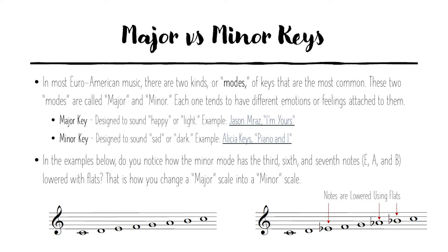Notice how the scales are built slightly differently from a major scale to a minor scale. We've got a C major scale like we've seen before, and now a C minor scale. In this minor scale the third, sixth, and seventh notes of the scale — which in this case are E, A, and B — have flats added to them, meaning they sound a little bit lower. That's how you change a major scale into a minor scale.